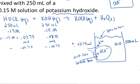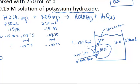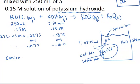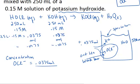So to figure out the pH of the solution, I have to first figure out the concentration of the weak base — the hypochlorite anion. The concentration is going to be the number of moles of the base, which is 0.0375 moles, divided by the total solution volume, which is 0.5 liters. So the molar concentration of this weak base is going to be 0.075 molar.